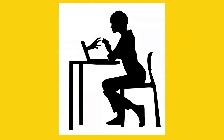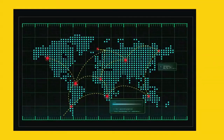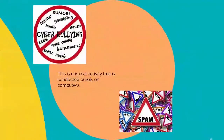This sort of crime can take two forms: computer-based crime and computer facilitated crime. Computer-based crime is criminal activity that is conducted purely on computers — for example, cyberbullying or spam. As well as crimes newly defined by the computing age, it also includes traditional crime conducted purely on computers, for example child pornography.